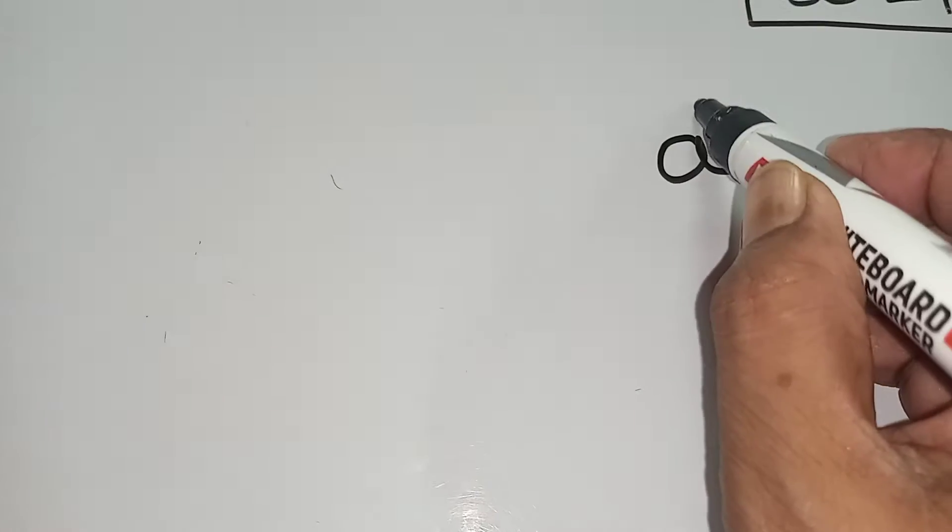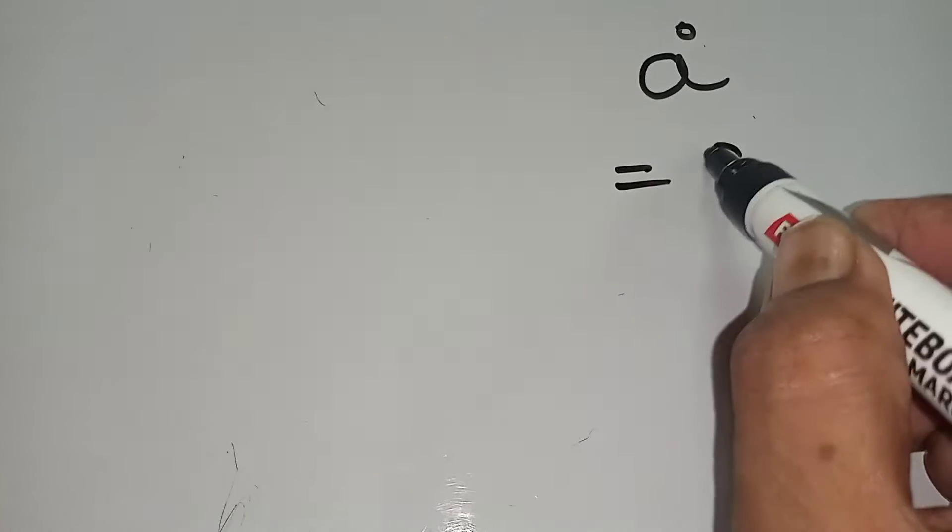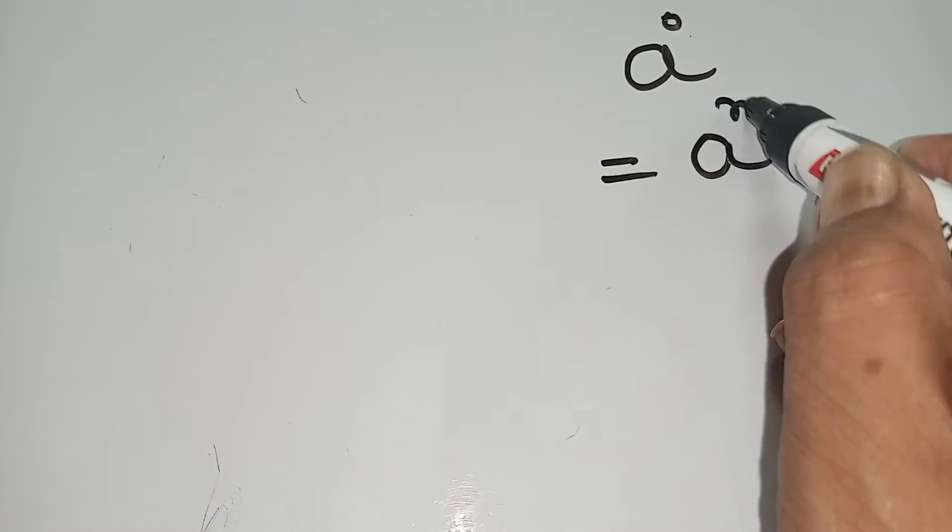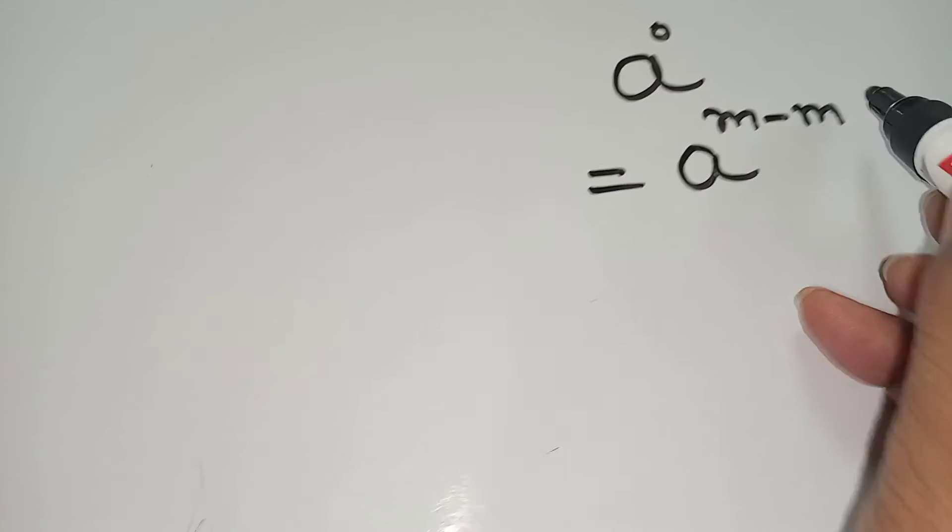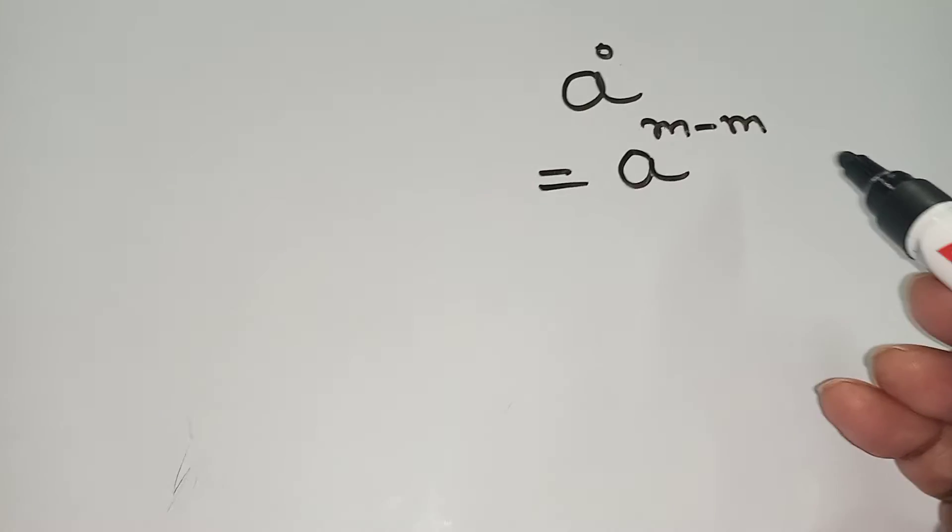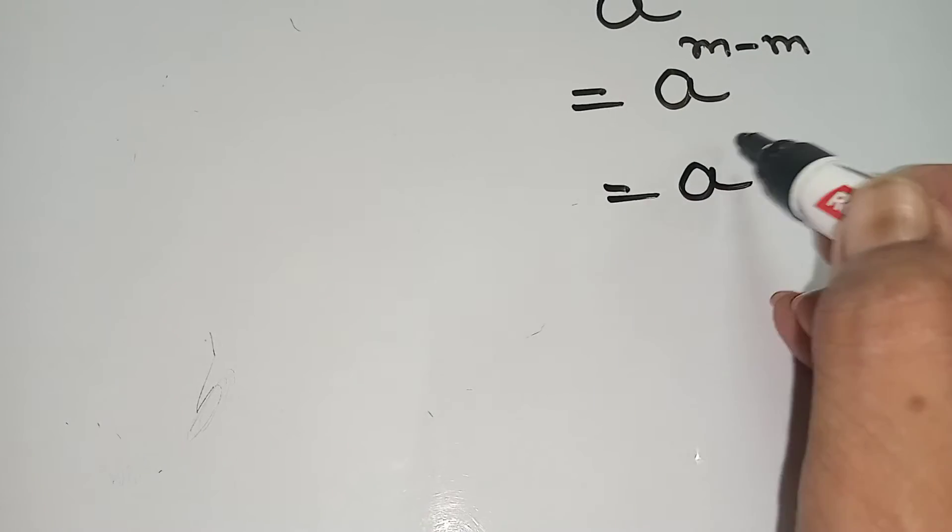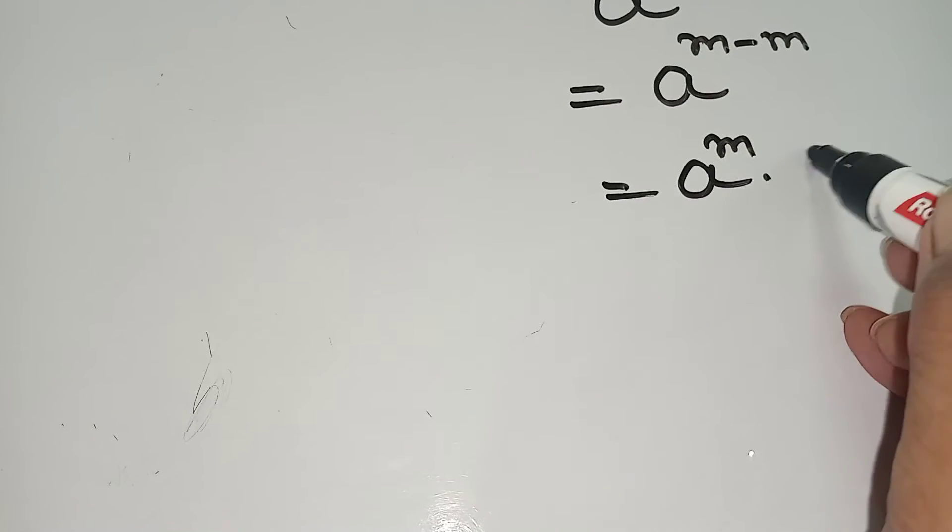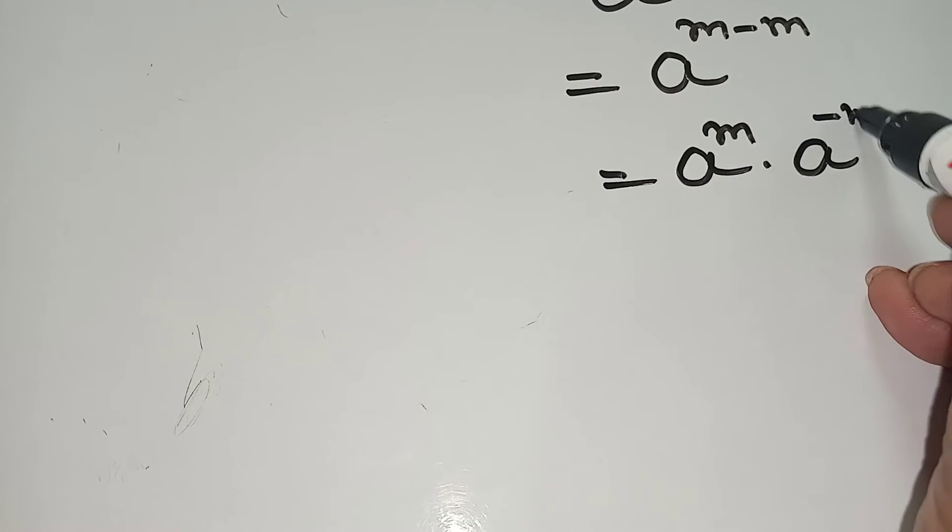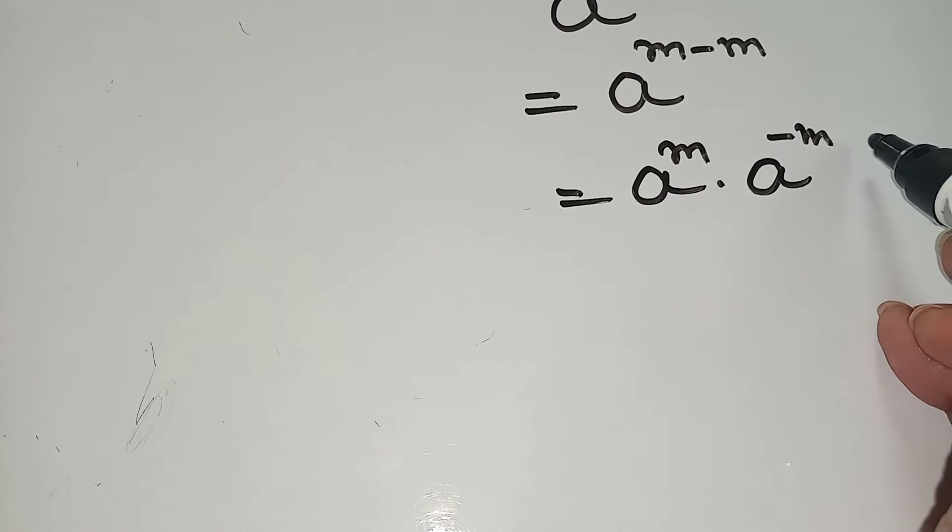Now a to the power 0, this one you can write a to the power m minus m. That means m minus m is 0. Now you break it, a to the power m into a to the power minus m. Basically the same power will be added.